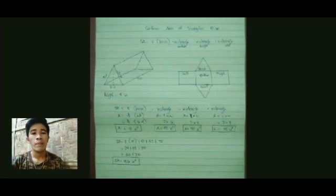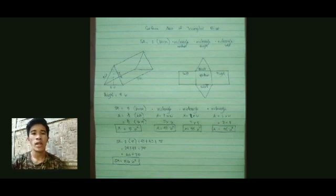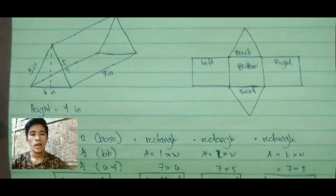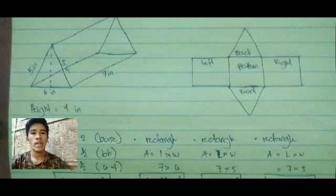Good day everyone. Today I will report on the surface area of a triangular prism. The formula to get the whole surface area of a triangular prism is: SA equals 2 times base plus rectangles — 2 times the base because it has 2 bases (front and back), plus the 3 rectangles which are the bottom, right, and left. In this example, the triangular prism has sides of 7 inches, 6 inches, and 5 inches, and a height of 4 inches.